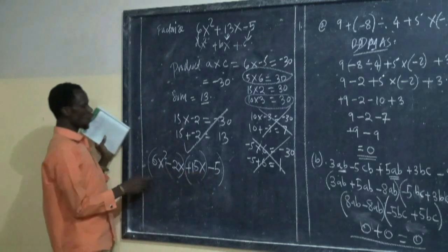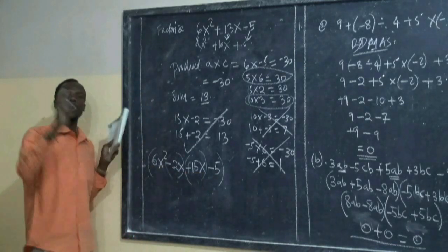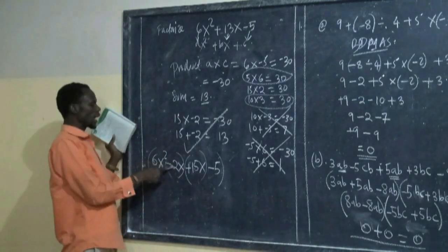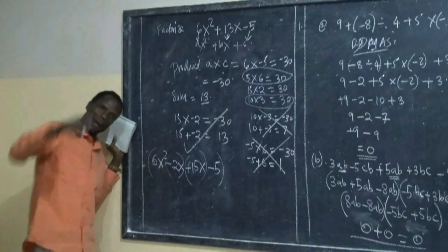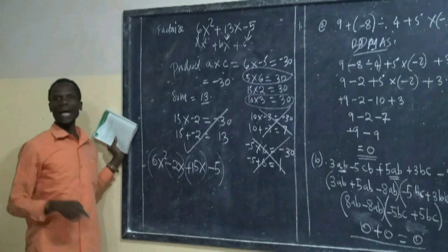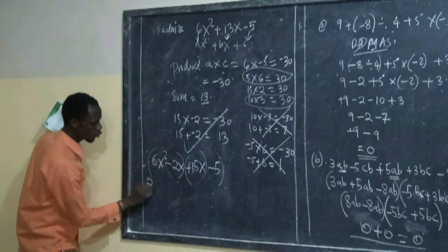Then from 6x² to negative 2x, find out the common factor. Means the number that will divide 6x and negative 2x. The common factor here is 2x.